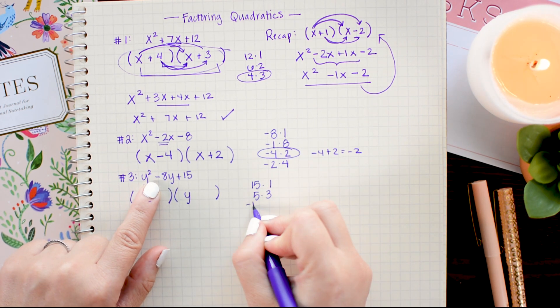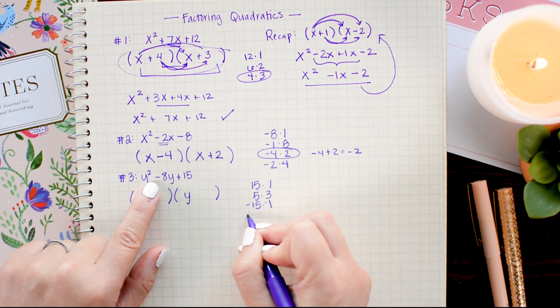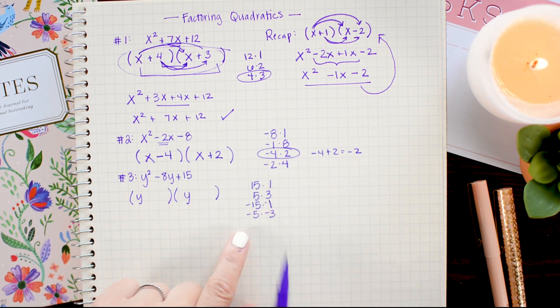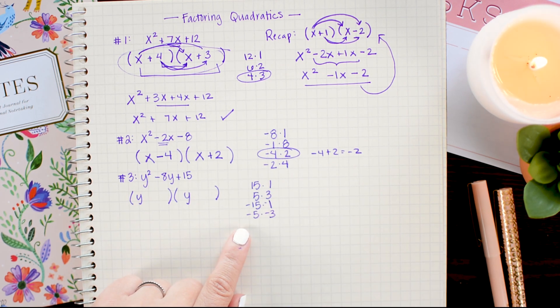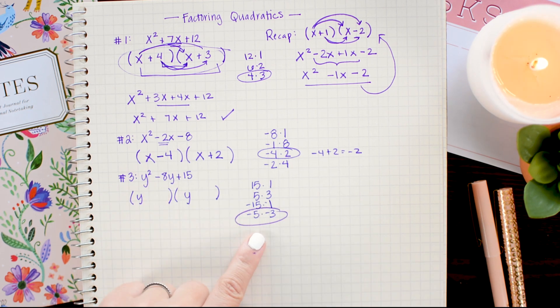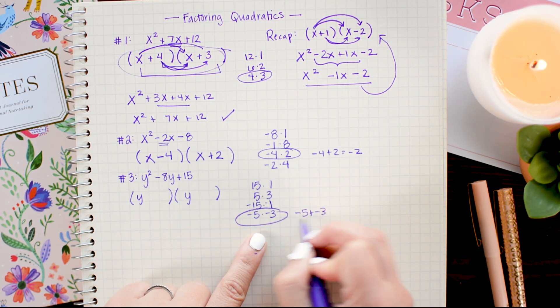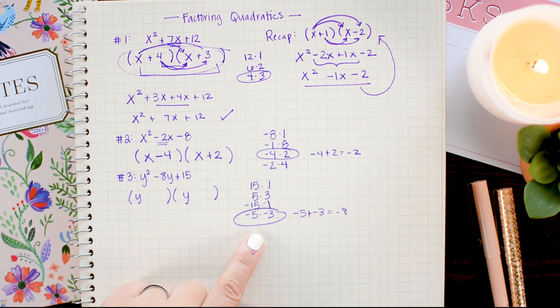So that means I also have negative 15 times negative 1, negative 5 times negative 3. Remembering negative times negative is a positive. So to get negative 8, I'm going to want to use negative 5 and negative 3, since negative 5 plus negative 3 equals negative 8.